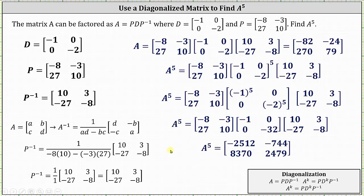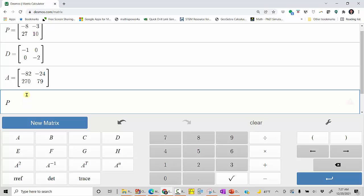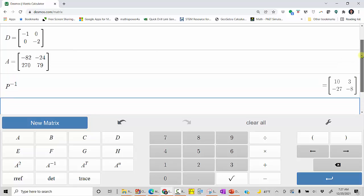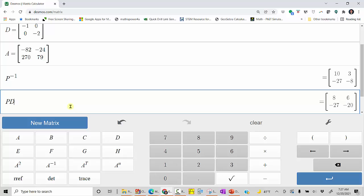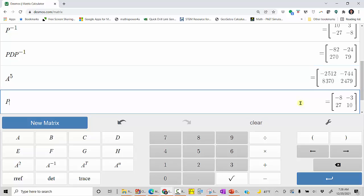Before we go, I do want to check this using the Desmos matrix calculator. I've already entered matrix P and matrix D. Let's verify P inverse. Our P inverse is correct. Let's also verify matrix A by determining P times D times P inverse. Matrix A is correct, and now let's find matrix A to the fifth two ways. Let's find A to the fifth and P times D to the fifth times P inverse. And notice how we do get the same result.